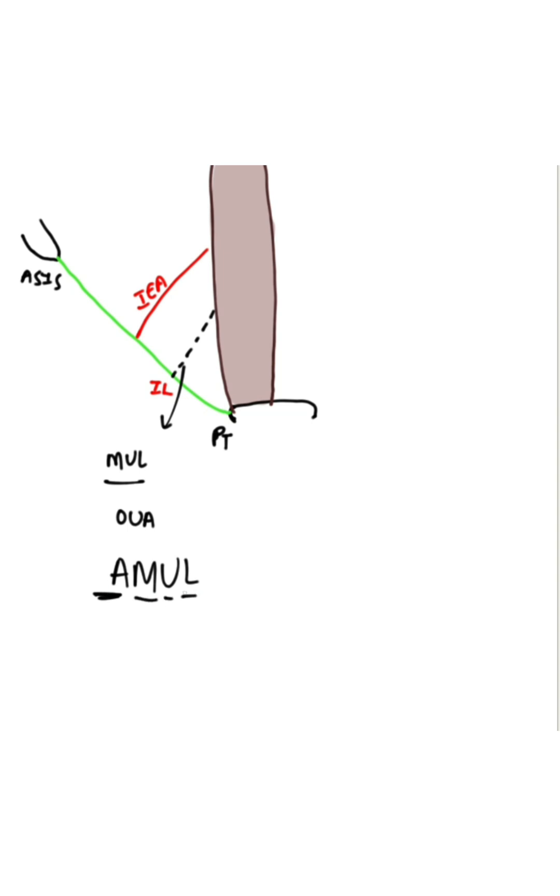Medial Umbilical Ligament. This is Medial Part. Lateral Part. Medial Part of the Triangle is strengthened by Conjoint Tendon.